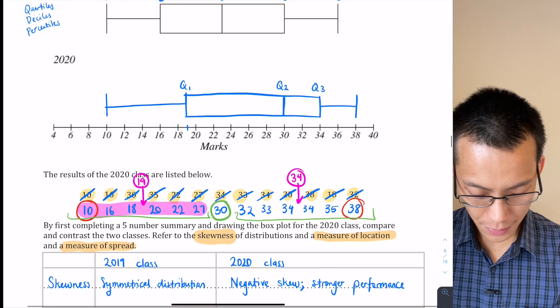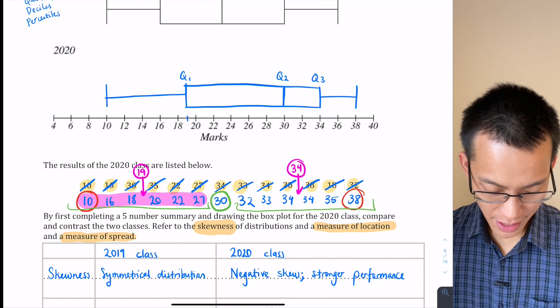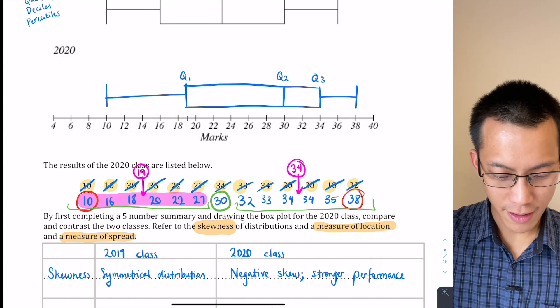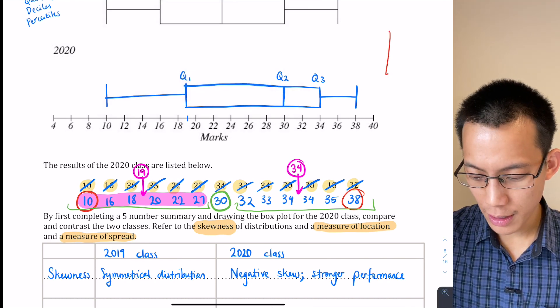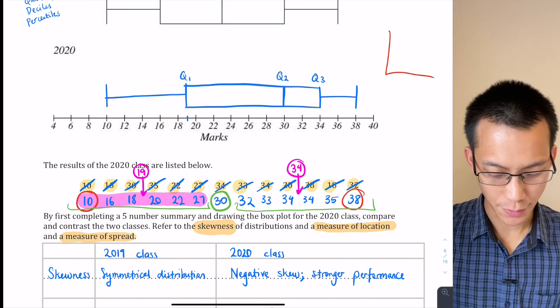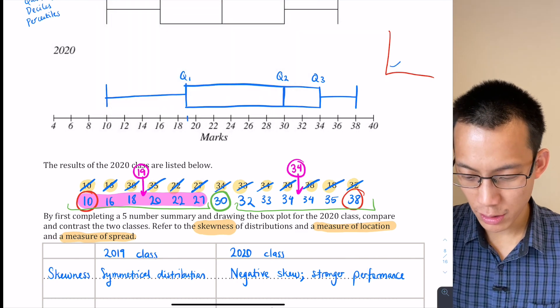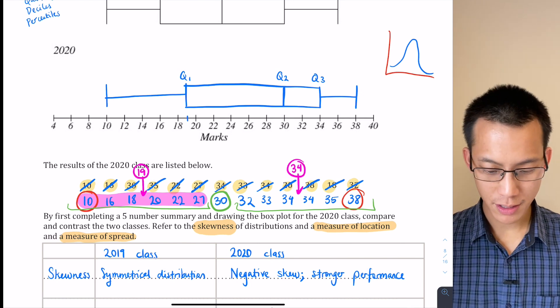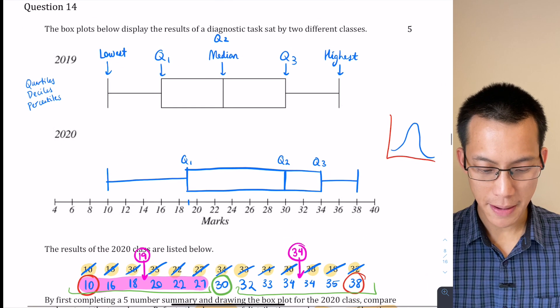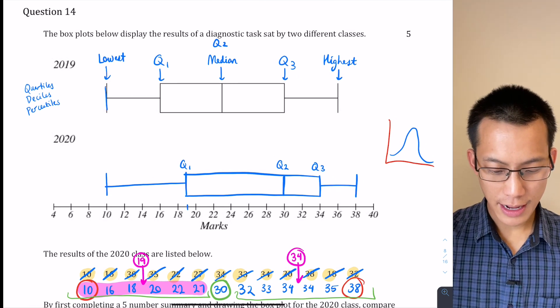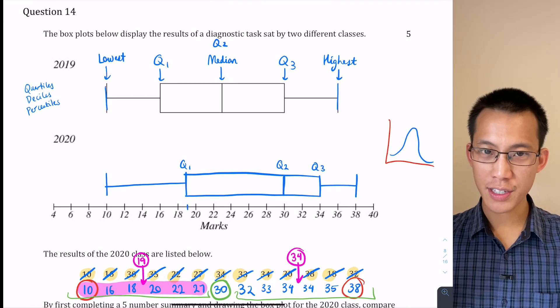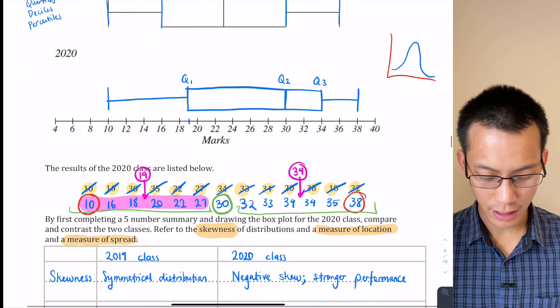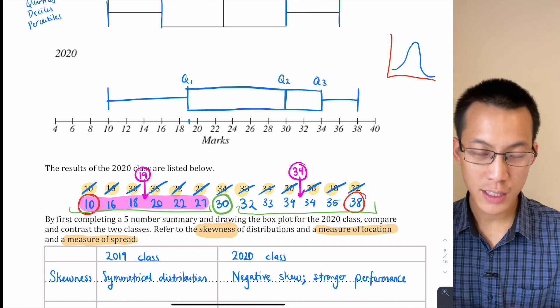So skewness—well, skewness talks about which way is the data leaning. So I'll give you an example quickly here. What does it look like if you've got a symmetrical data set? It's going to look like this if you were doing a plot of it. But on a box and whisker plot, you can see what it means is that your lowest and your highest are symmetrically positioned around Q1 and Q3. So that's why you can see I've written that the 2019 class has a symmetrical distribution.